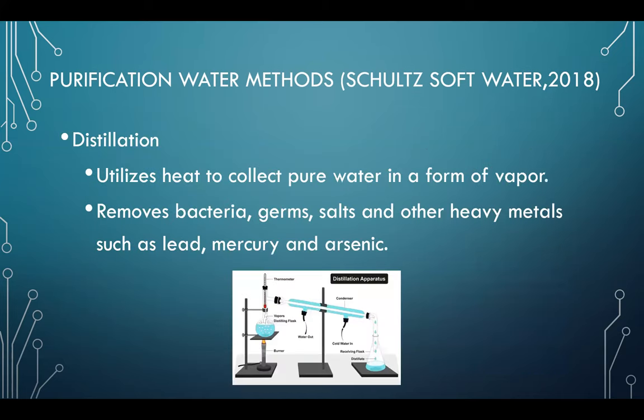Next, we have distillation. As you can see in the picture, there is a chart showing how the water is distilled. It utilizes heat to collect pure water into a vapor form. This method takes a lot of time, and you cannot distill large quantities of water — only a little at a time. However, it removes bacteria, germs, salts, and other heavy metals such as lead, mercury, and arsenic.